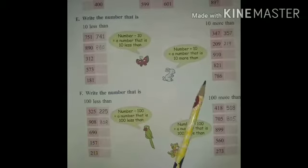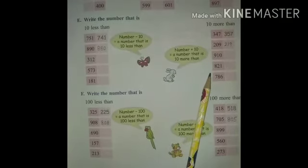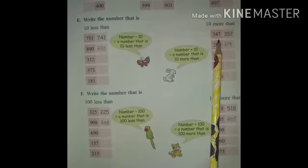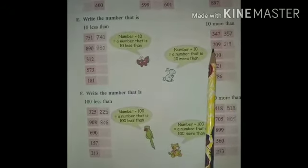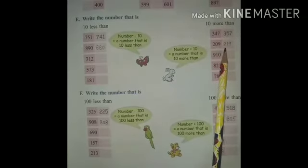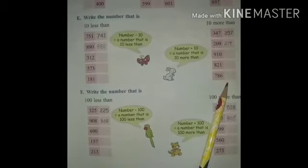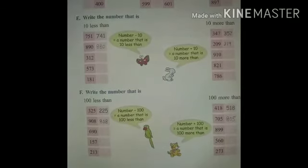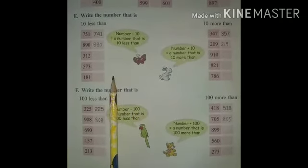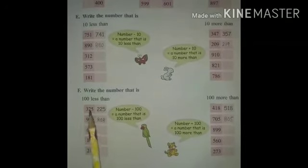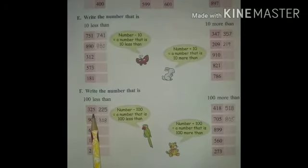Okay, next is 10 more than. Earlier we did 10 less than — we subtracted 10. Now we have to add 10. First question: 347 — 347 plus 10 gives 357. Second question: 209 — 209 plus 10 gives 219.